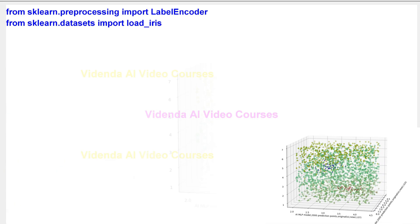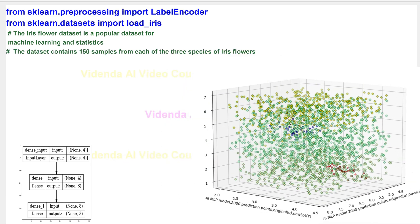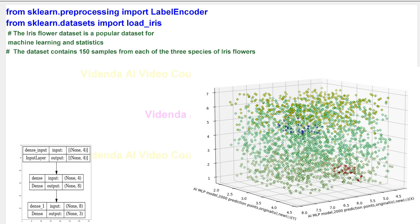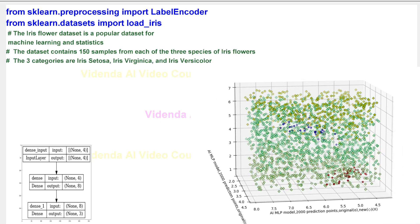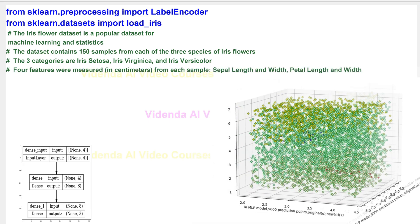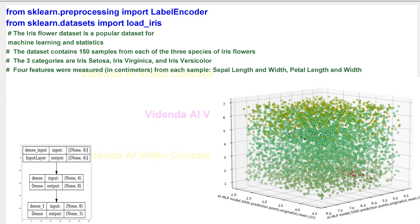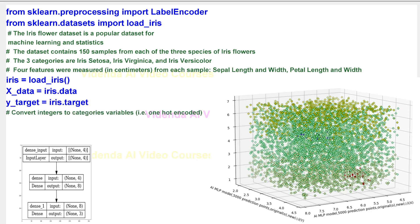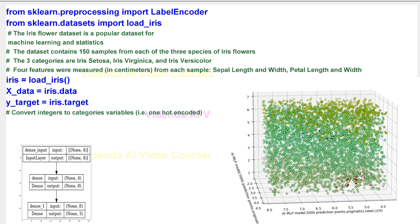Load iris dataset. The iris flower dataset is a popular dataset for machine learning and statistics. The dataset contains 150 samples from each of the three species of iris flowers. The three categories are iris setosa, iris virginica, and iris versicolor. Four features were measured, in centimeters, from each sample: sepal length and width, petal length and width.